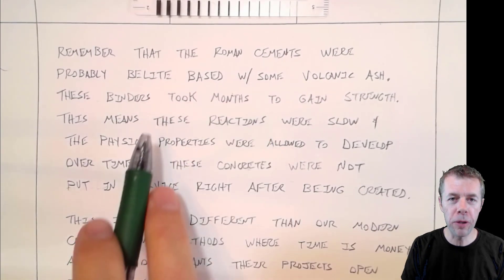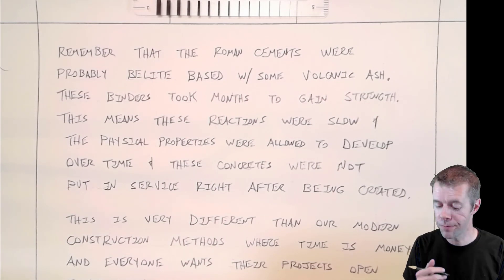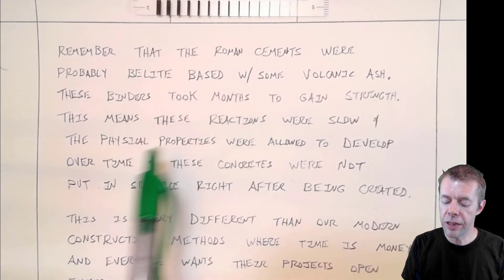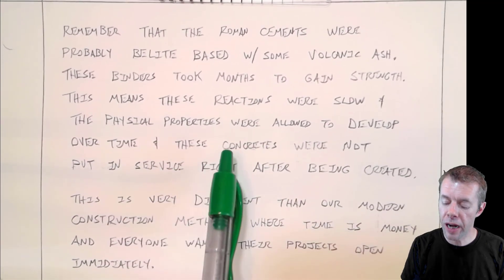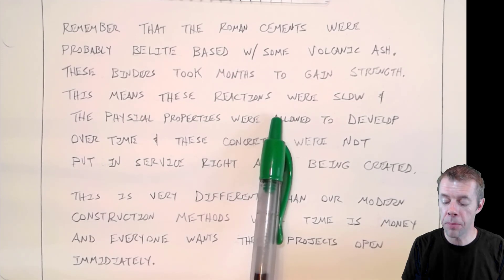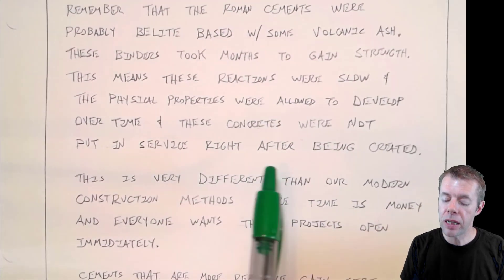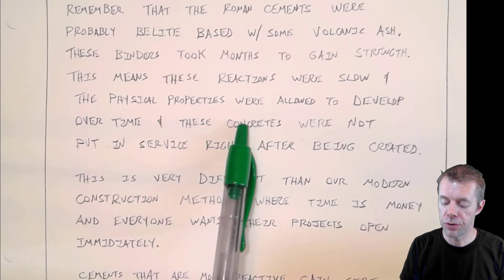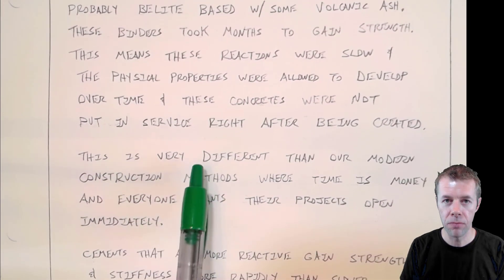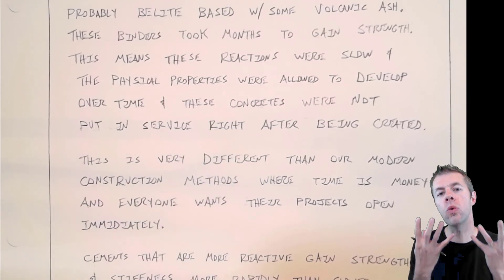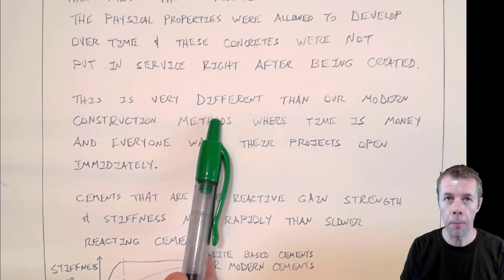Recall that the Roman cements were probably belight-based. I talked about that in a previous video. And I'll make a link to it so you can watch it if you want. But that just means that these binders took months, months to gain strength. This means that these reactions were really slow. I mean, sometimes, some people think it took over a year for them to open these structures after casting the concrete. But there's a lot of benefits to this. The physical properties were allowed to develop over time. And these concretes were not put in service right away. They weren't loaded right away. They were allowed to slowly gain their strength over time.